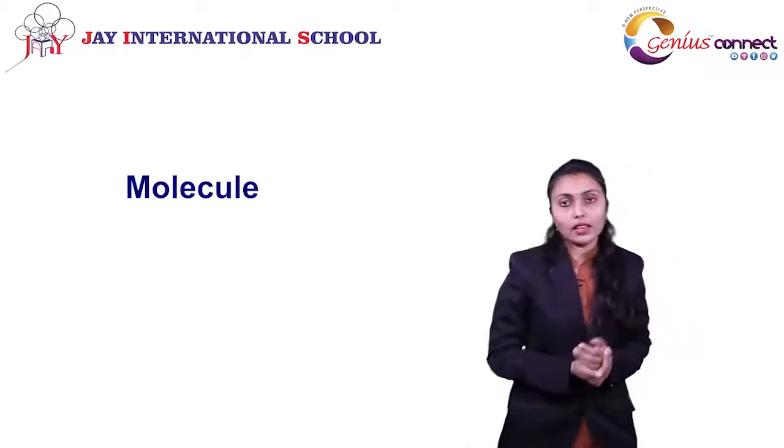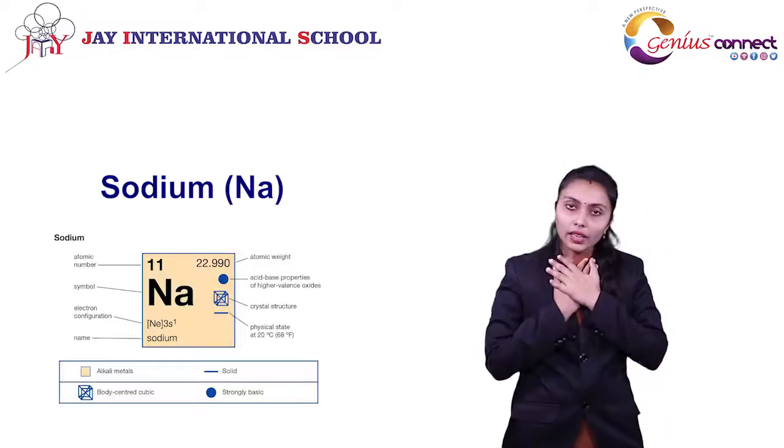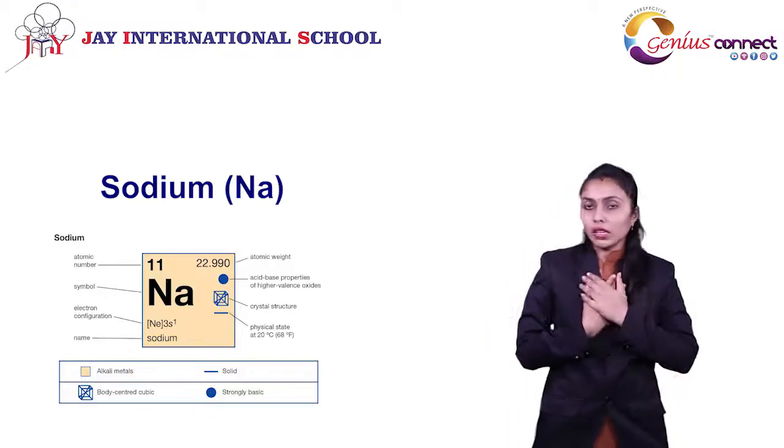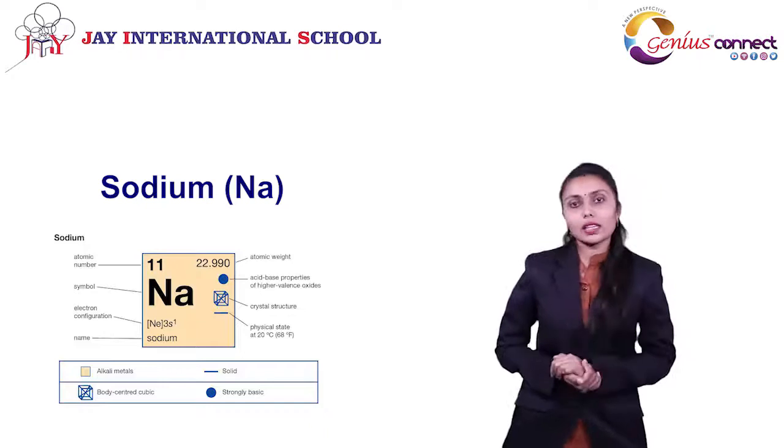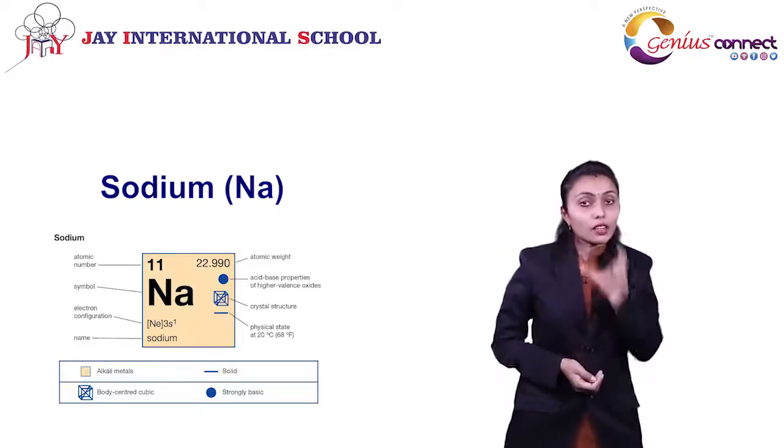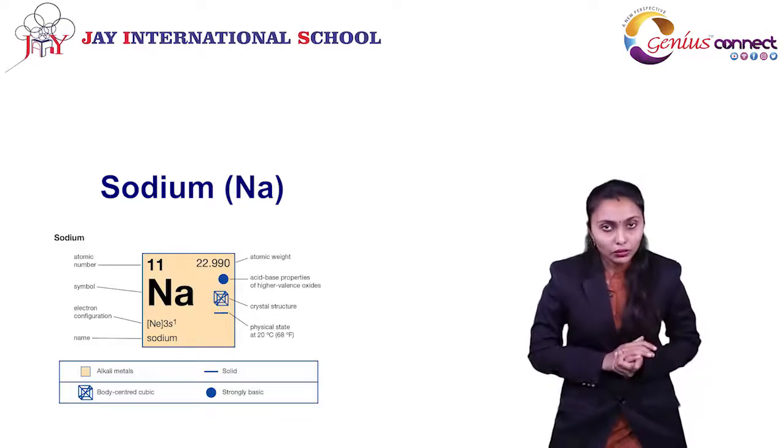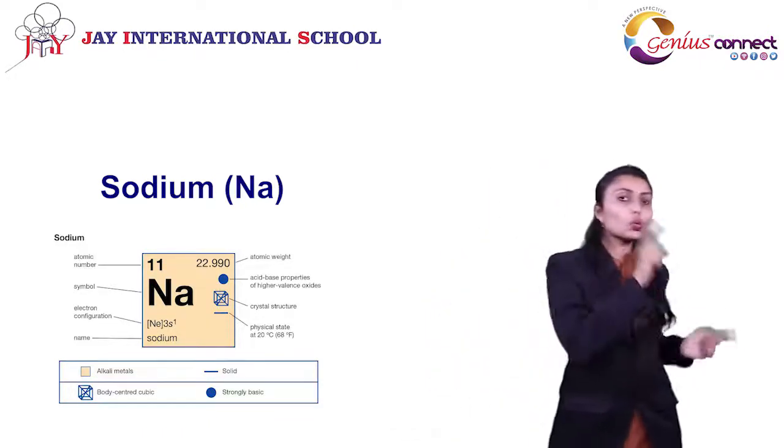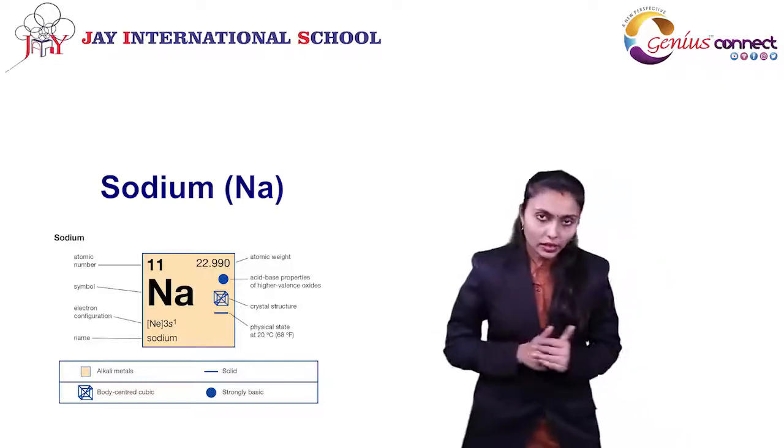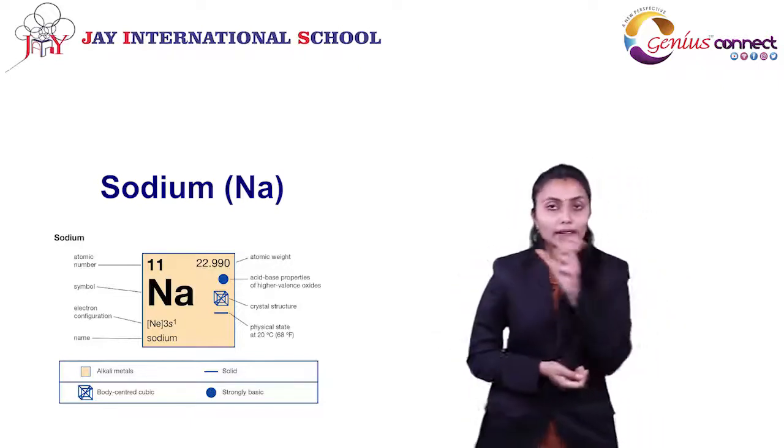For example, if I am sodium, then I have to think what is my atomic number. My atomic number is 11. If I write it in the form of electronic configuration in the shell, then I can write it like 2, 8, 1. It is based on the rule: 2, 8, 1.